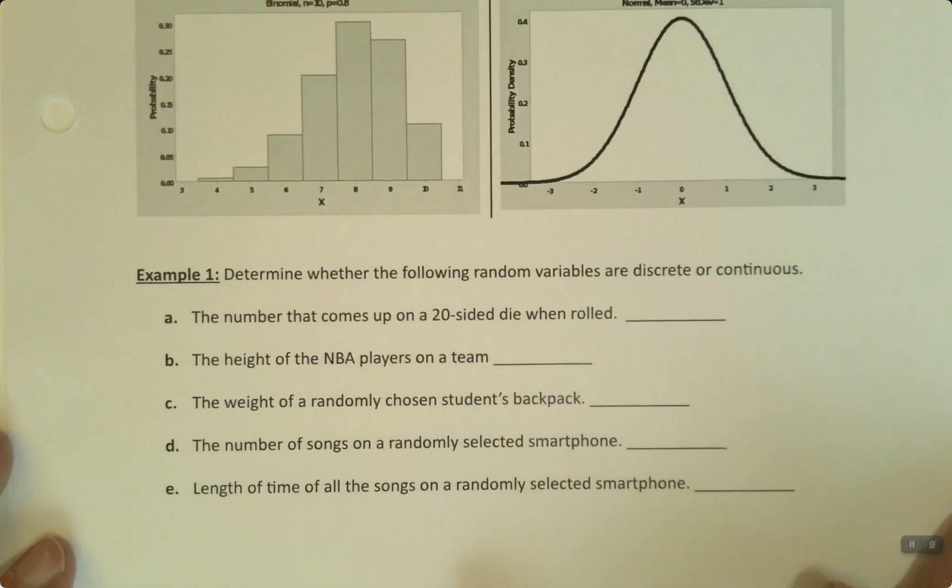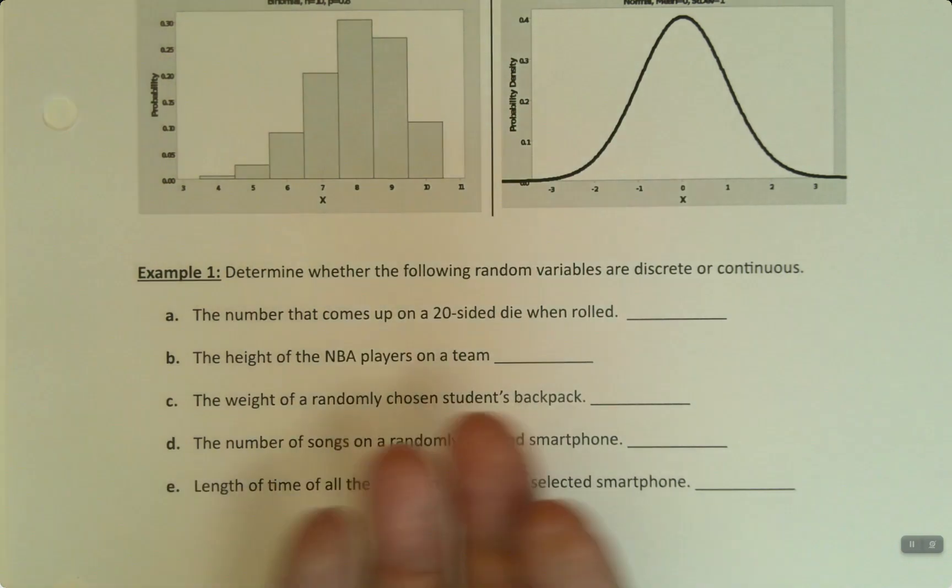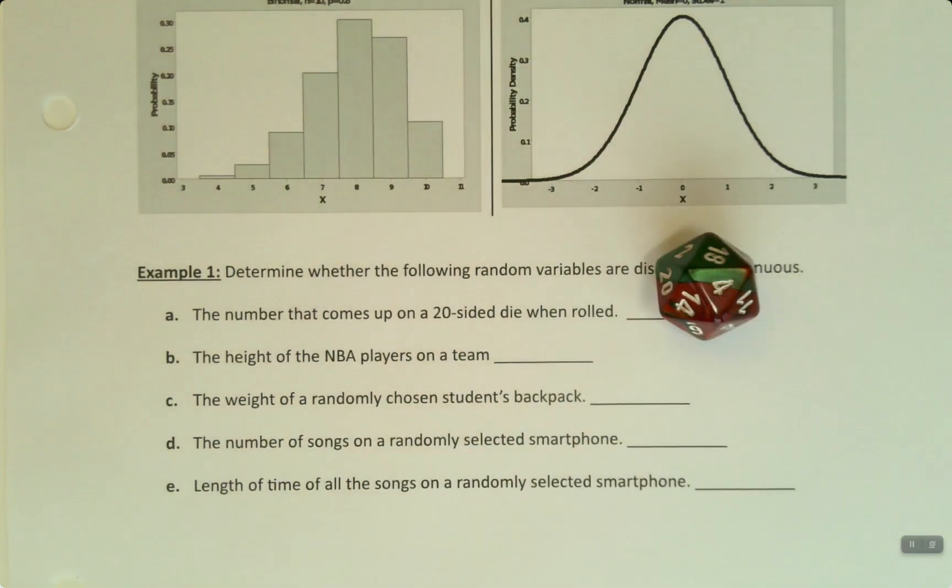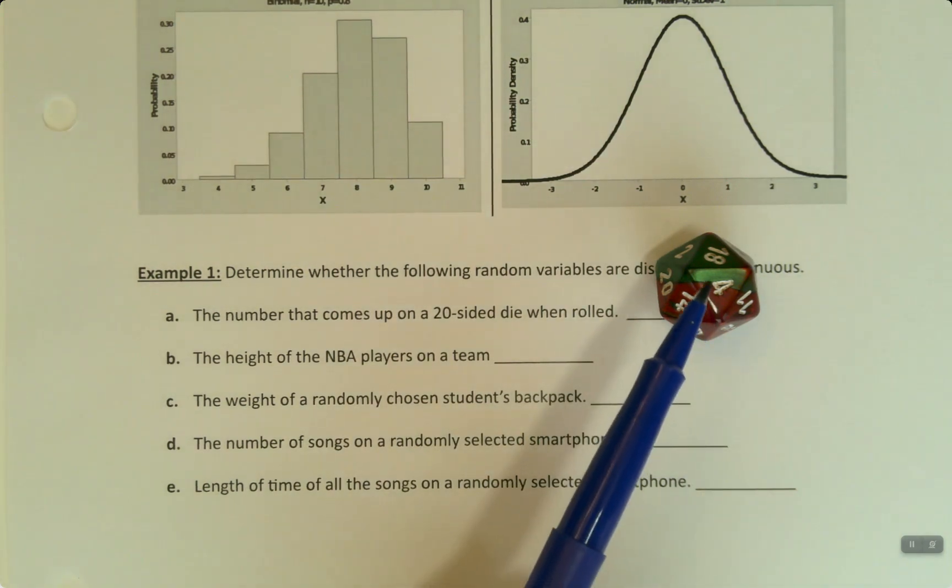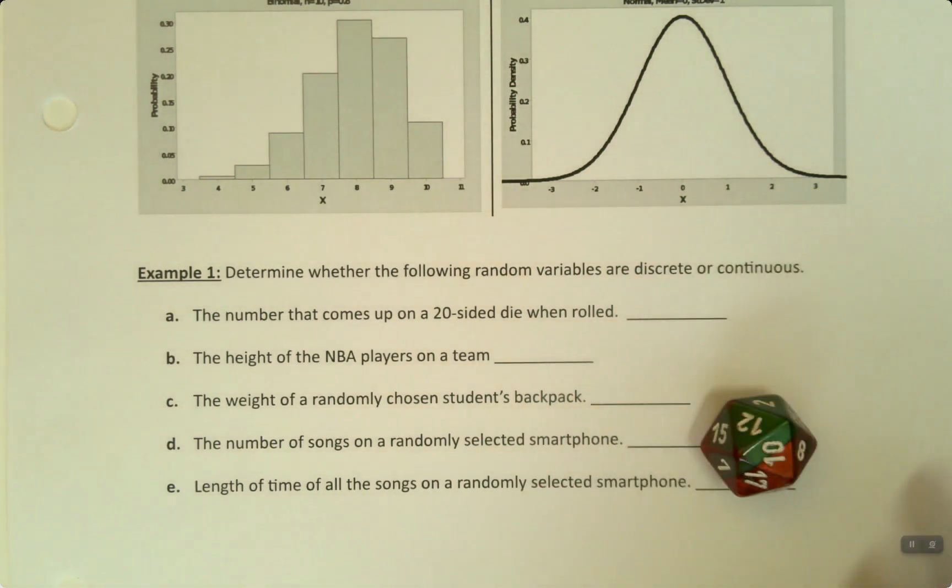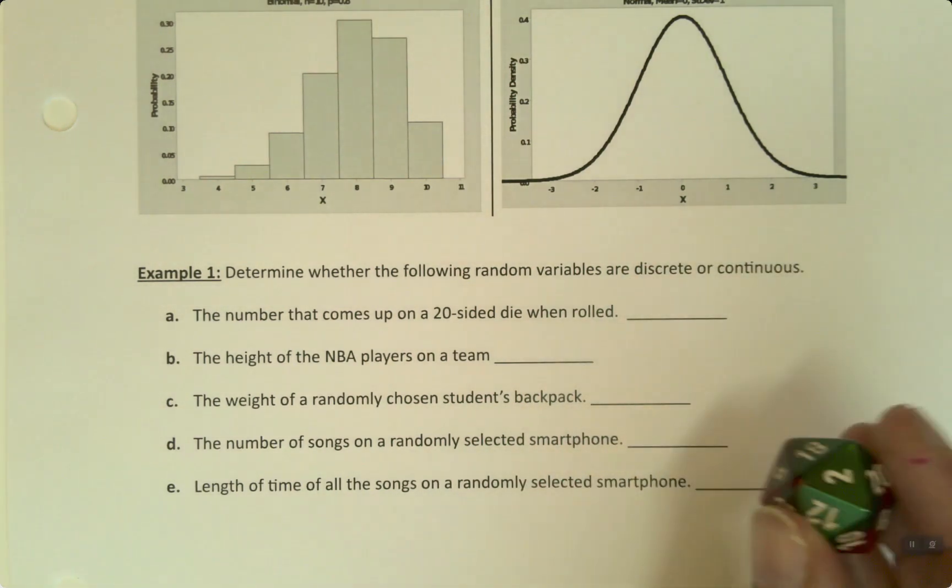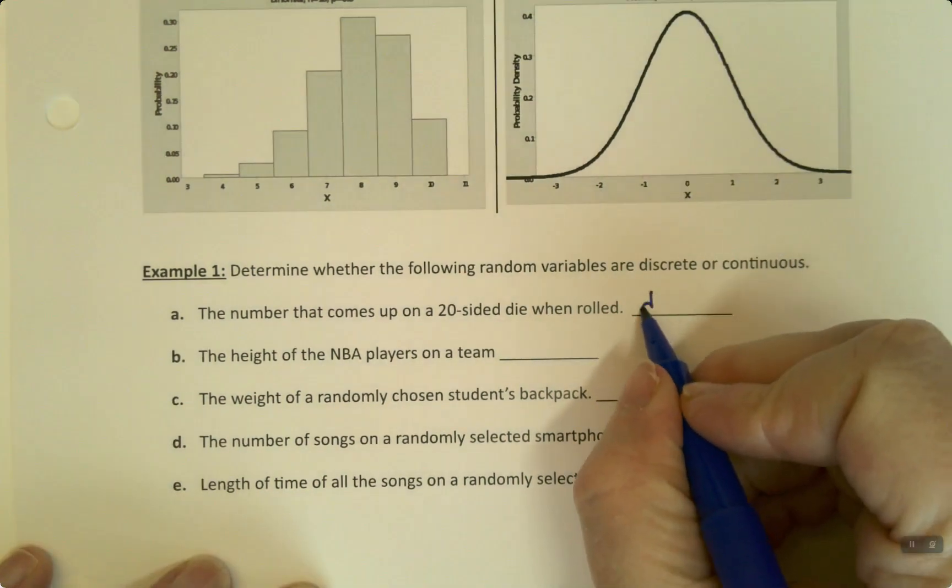Alright, so let's look at some examples and determine whether they are discrete or continuous. The first thing is the number that comes up on a 20-sided die. As you can see, the 4 facing up is a whole number. No decimals. I can count the number of outcomes. There's a finite, limited supply of them. And they have no decimal places. So, that is definitely discrete.